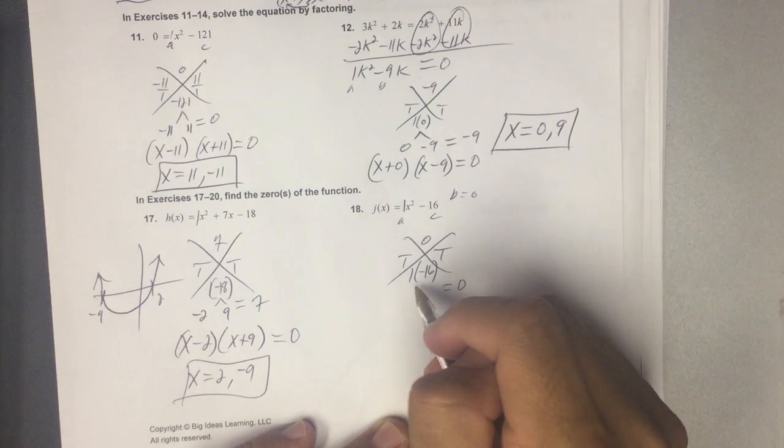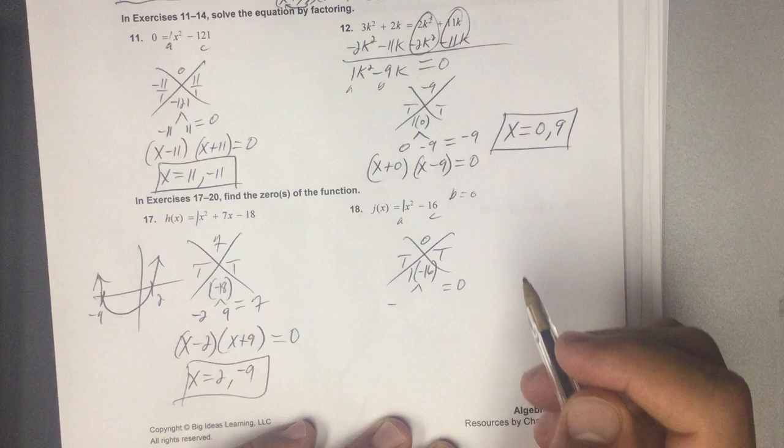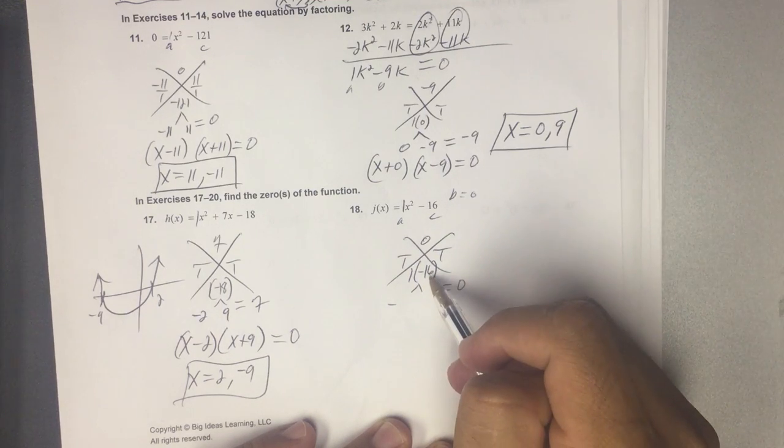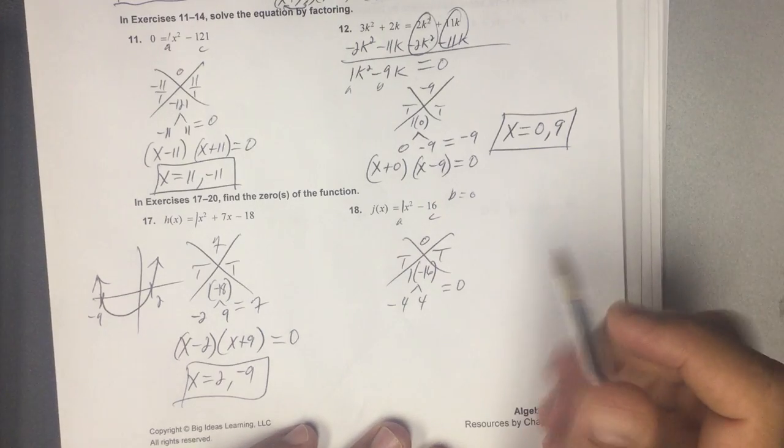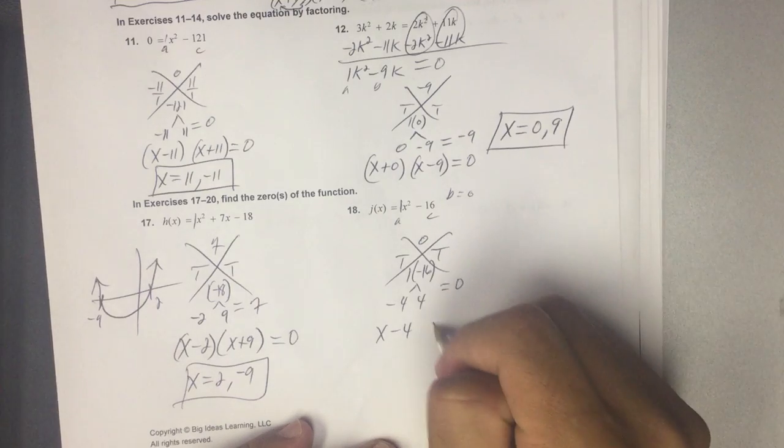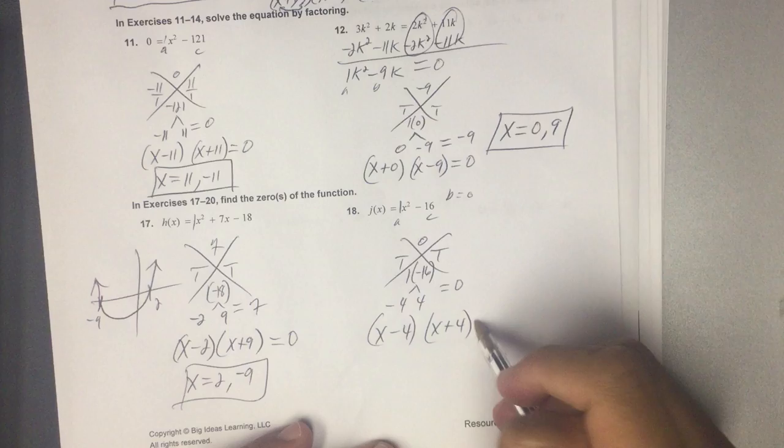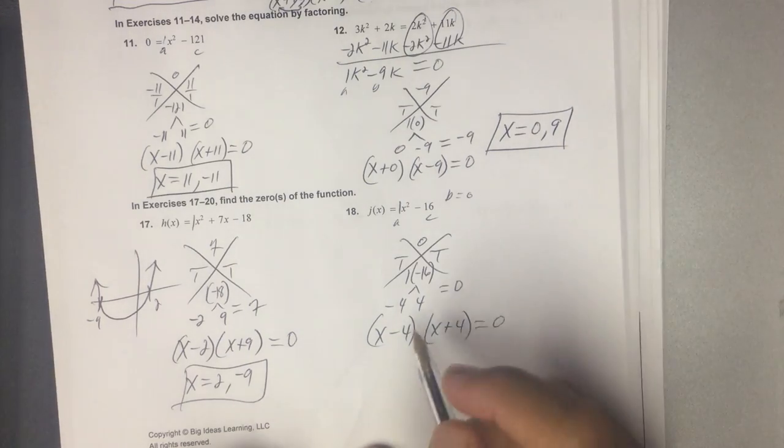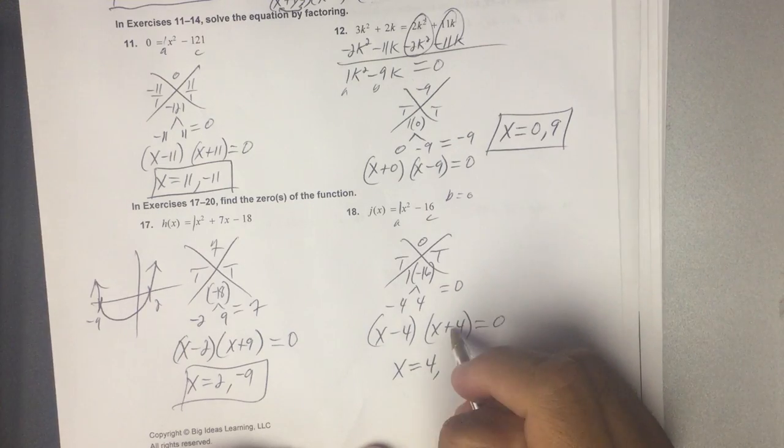So I know I need the same number twice, 1 positive and 1 negative. Well, what's the square root of 16? It's 4. 4 times 4. Make 1 negative, and it goes away. So I have x minus 4, x plus 4. When does that equal 0? That equals 0 when x is either 4 or negative 4.